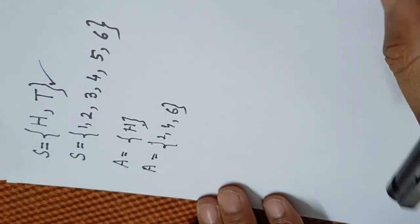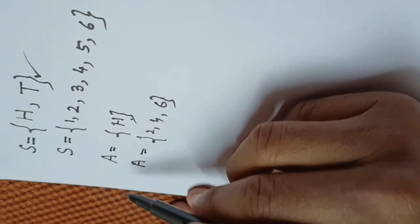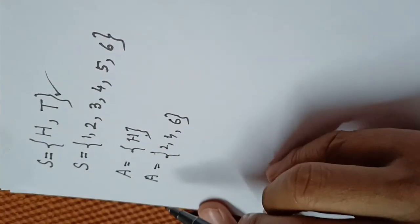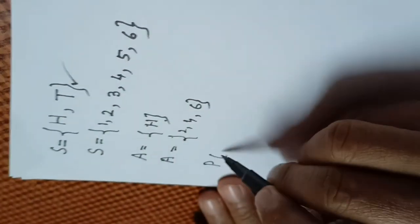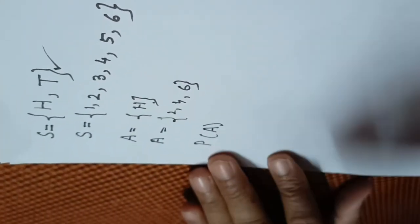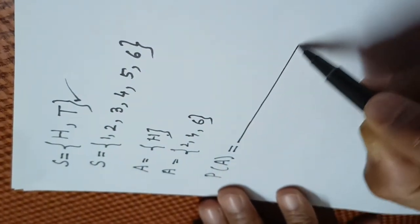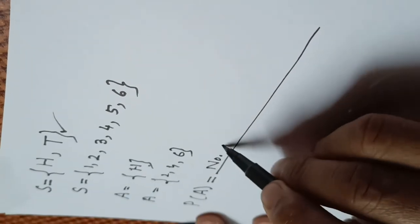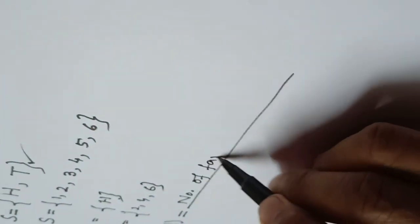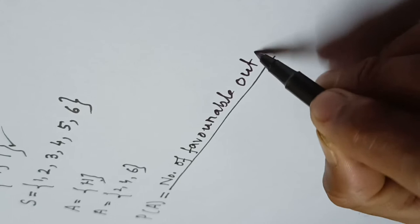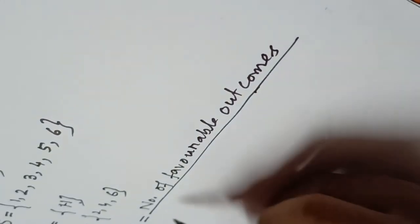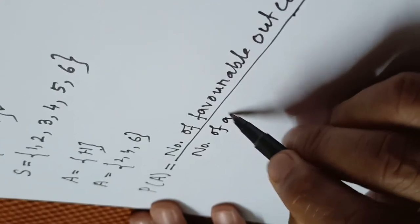Now we are going to discuss the probability of an event A. The probability of an event means the chance of happening or chance of occurrence of that event. It is calculated by the formula: number of favorable outcomes divided by number of all possible outcomes.